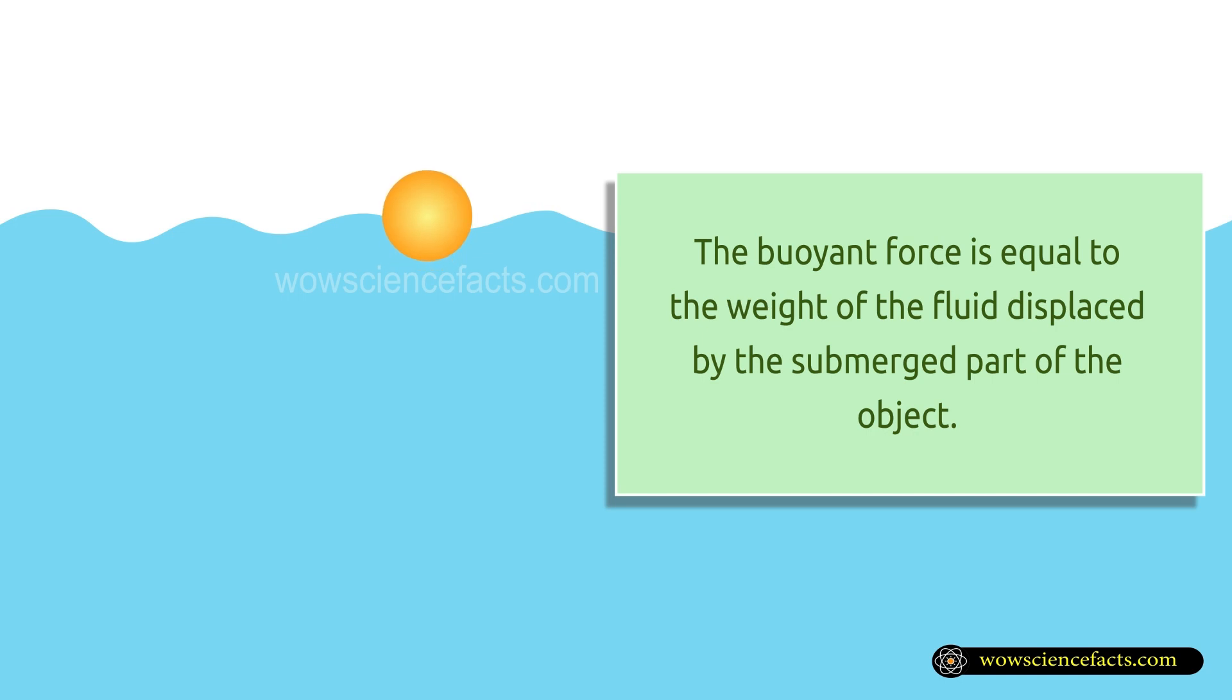When an object is submerged in water, it displaces an amount of water equal to its own volume. This displaced water creates an upward force, or buoyant force, that opposes the object's weight, allowing it to float.